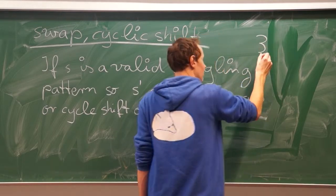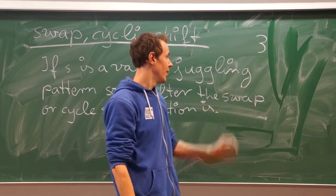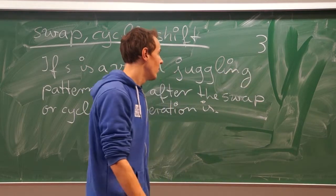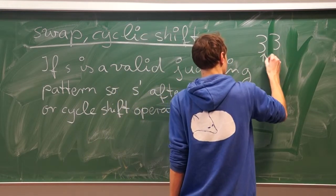When we have a closer look at three, this is a valid juggling trick, but I couldn't do a swap there. So what I do is draw another three, and now I can swap those two.